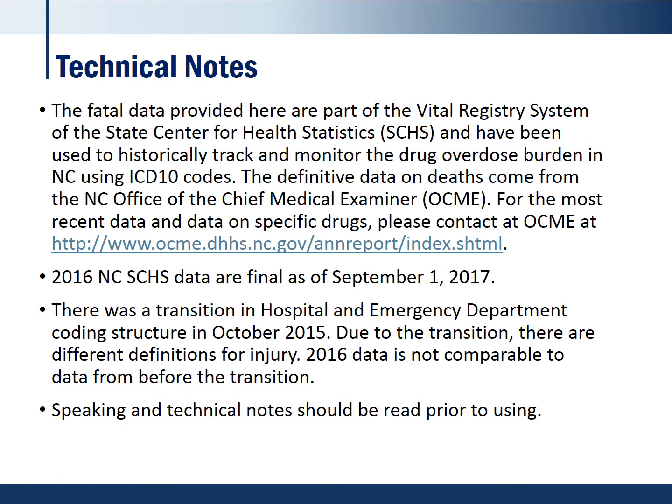Before we begin, there are just a few technical notes to point out. The majority of the fatality data presented here come from the Vital Registry System of the North Carolina State Center for Health Statistics. We have historically used these data, the ICD-10 codes from death certificates, to track and monitor the drug overdose burden in North Carolina. We acknowledge that there are some challenges with the ICD-10 coding system and therefore want to remind everyone that the definitive source of death data comes from the North Carolina Office of the Chief Medical Examiner, or OCME. OCME also has the most recent data and data on deaths involving specific drug types. The 2016 mortality data used in this presentation was closed and made final in September of 2017.